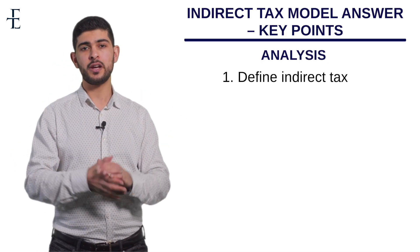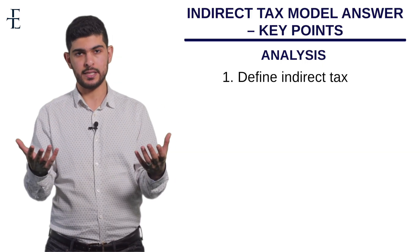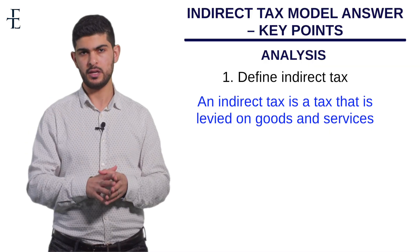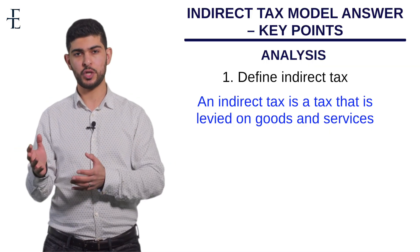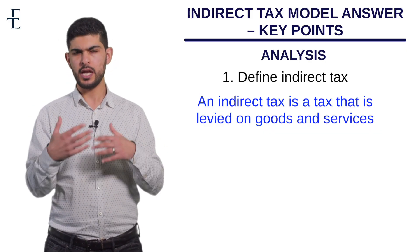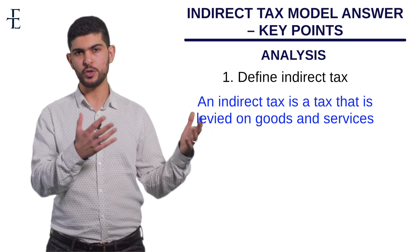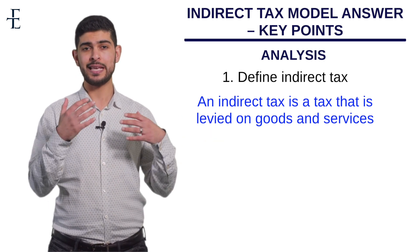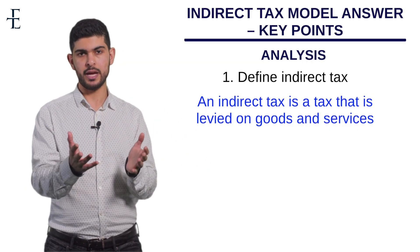Step one: the first thing I always want you to do is define an indirect tax. An indirect tax is a tax that is levied on goods and services. Try to identify from the question whether this is a specific tax or an ad valorem tax. In the June 2017 paper, it was an ad valorem tax because they added a percentage on top of it, so you would define an ad valorem tax.